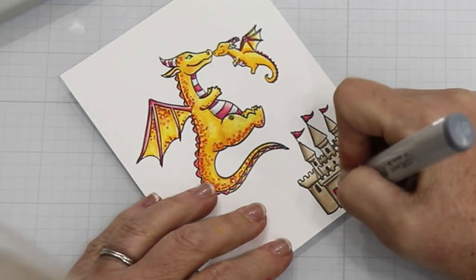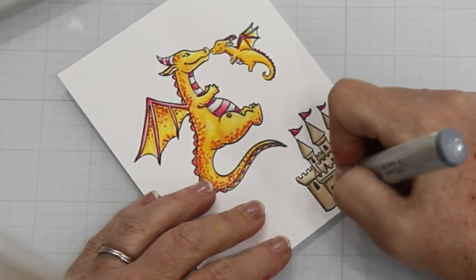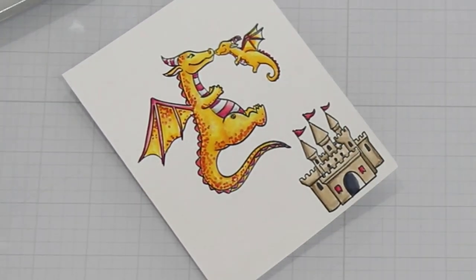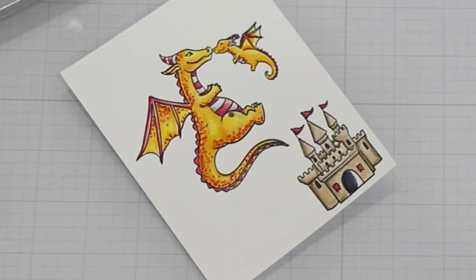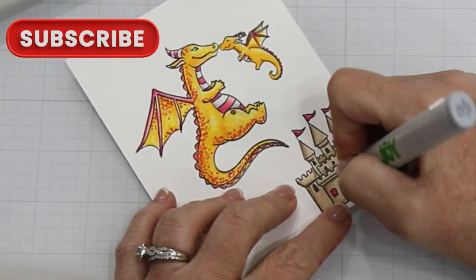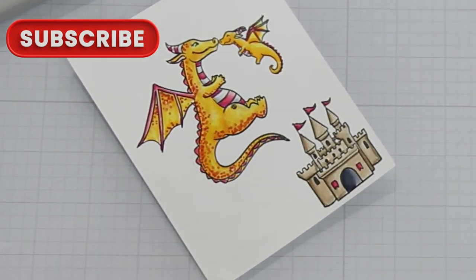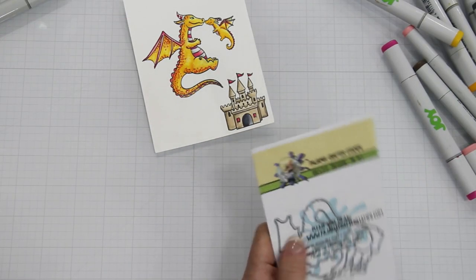So like I said, I used the E47, I'm sorry, the E44, 43, and 42. I colored in that flag with the RV14, which was my mid-tone color. And then the windows and the door, I used the C7, 5, and 3.